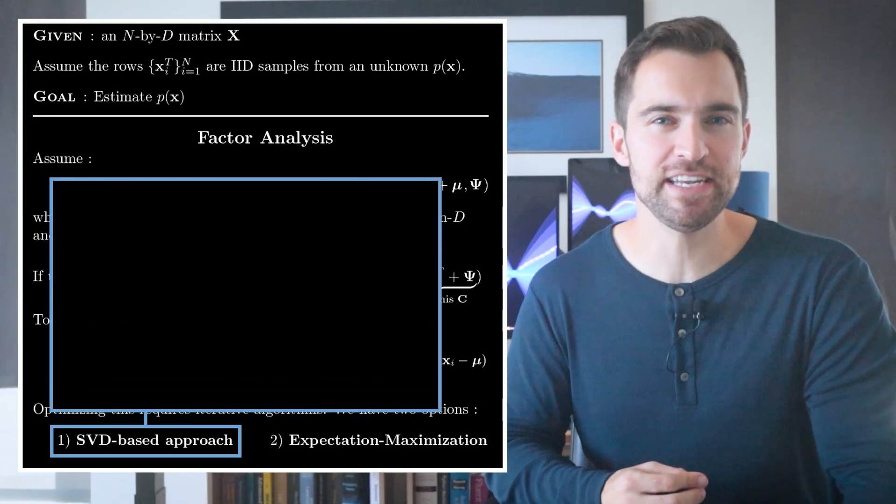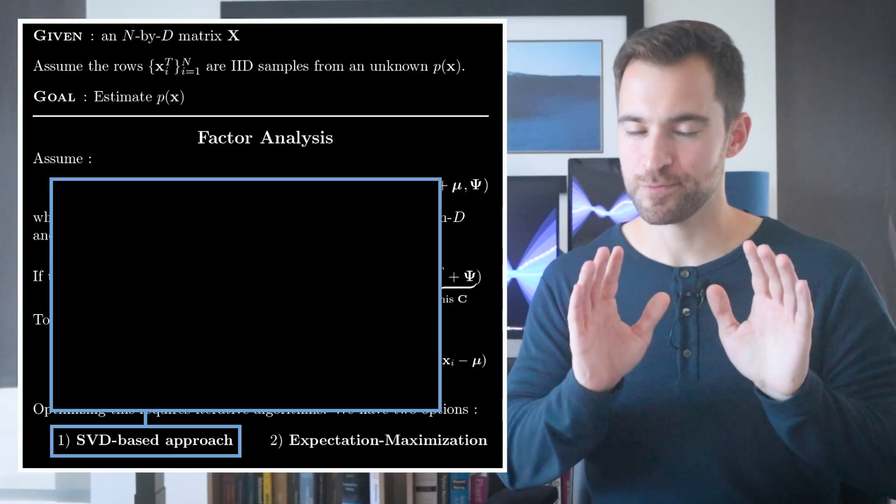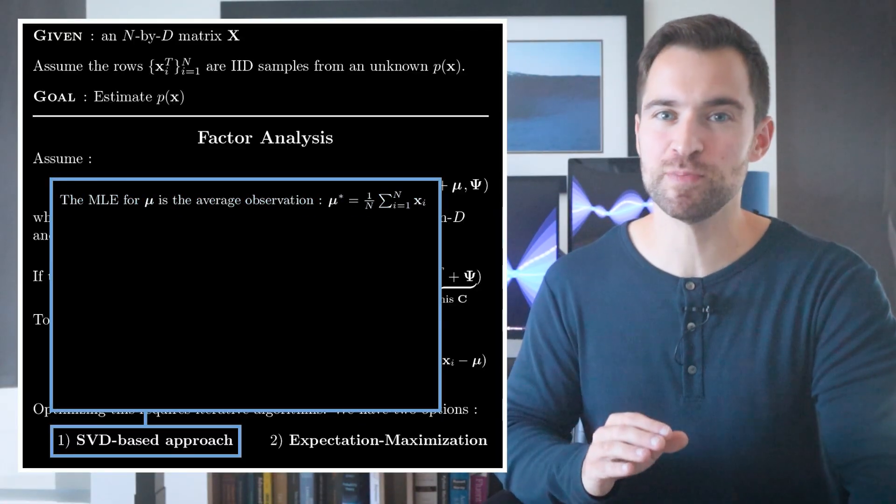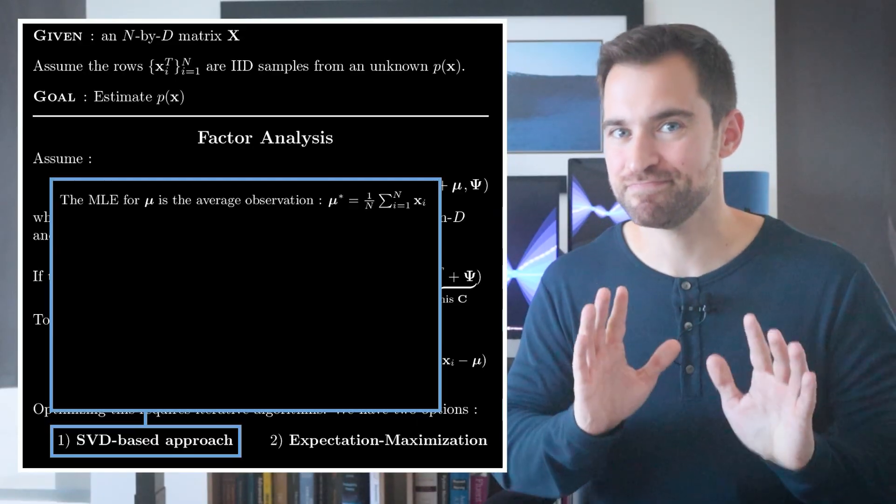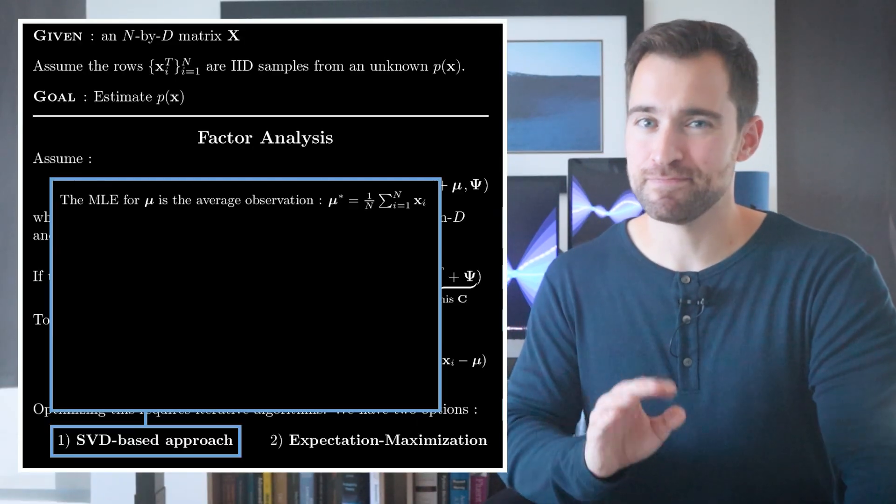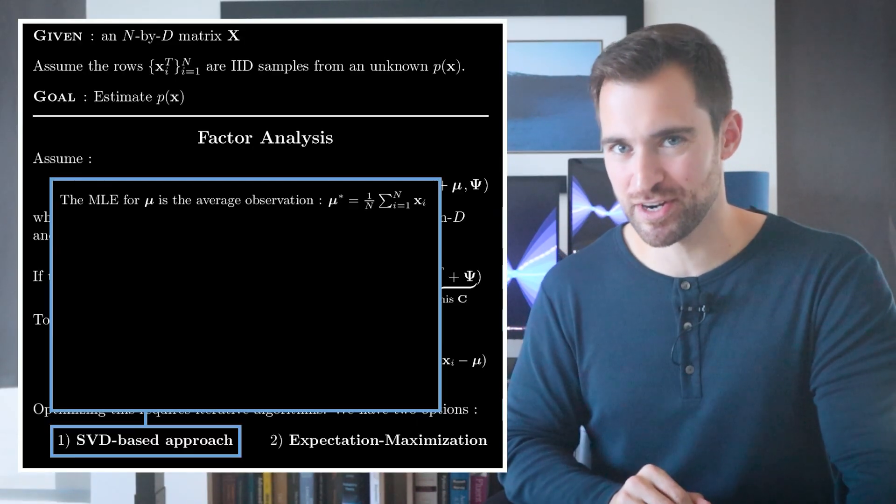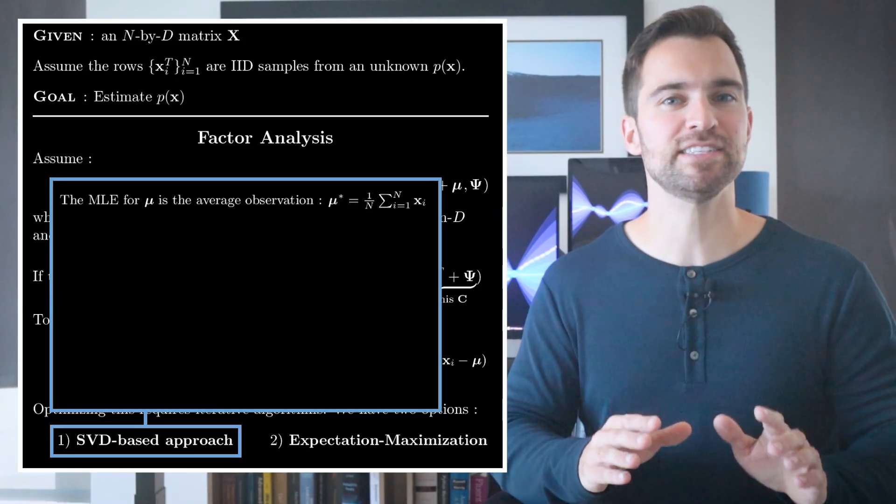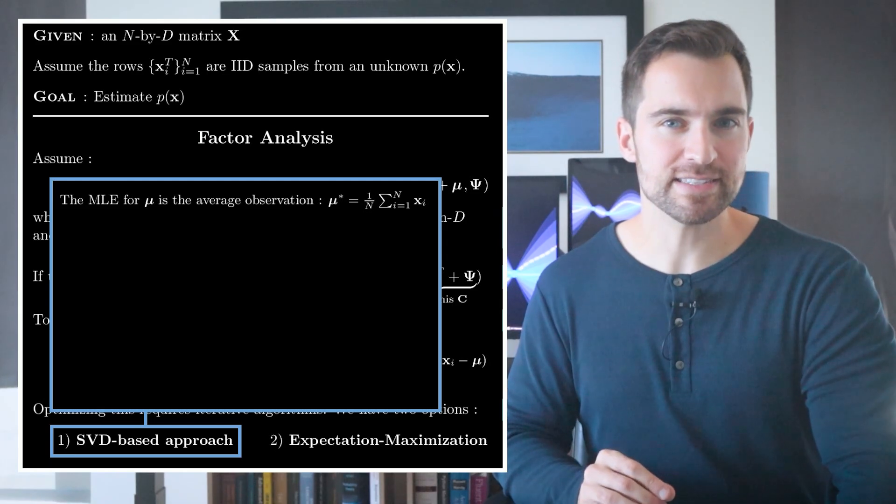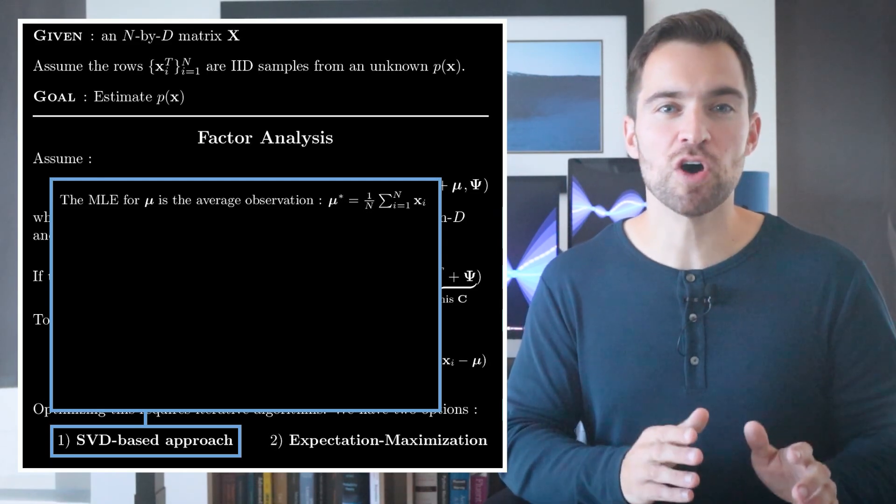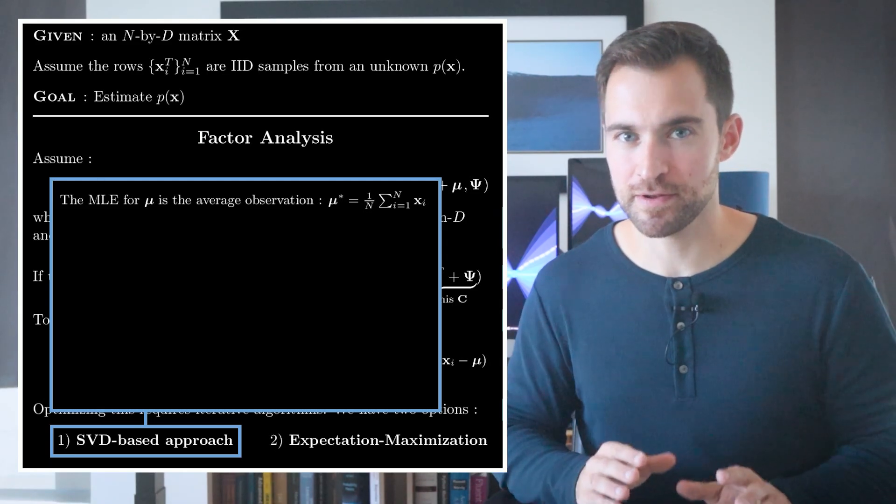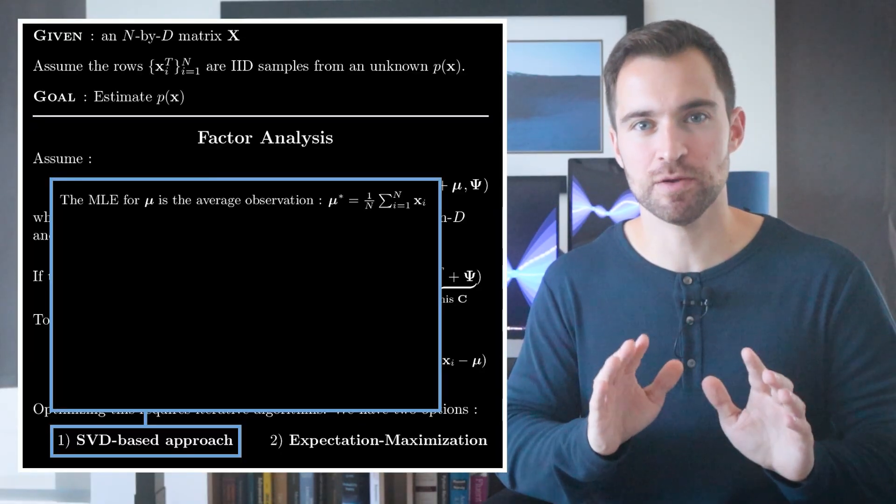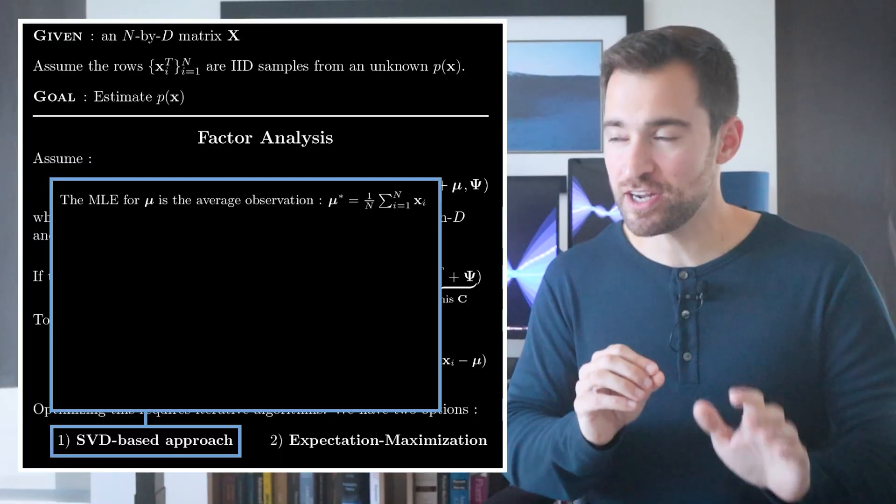So how does the SVD-based approach work? Well, it turns out mu is super easy. The maximum likelihood estimate of mu turns out to be the average of the X columns. Easy. But from here, things get a bit trickier. The approach is to alternate between optimizing for w and optimizing for psi. That is, given a w, we can solve for psi and vice versa. So, we initialize randomly and iterate until the log likelihood stops improving.